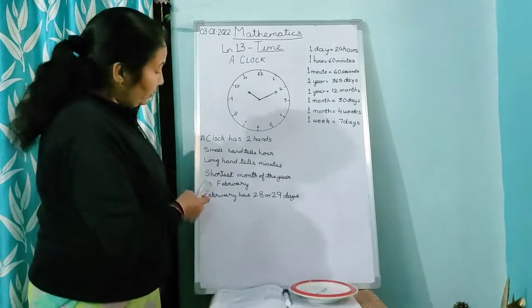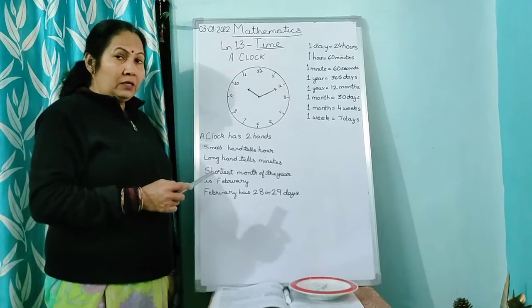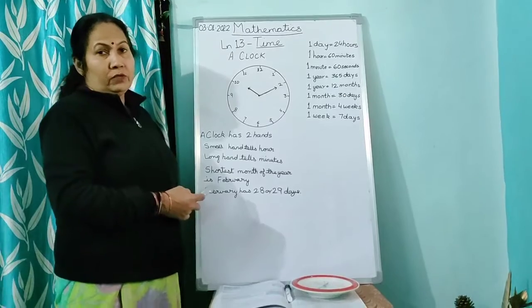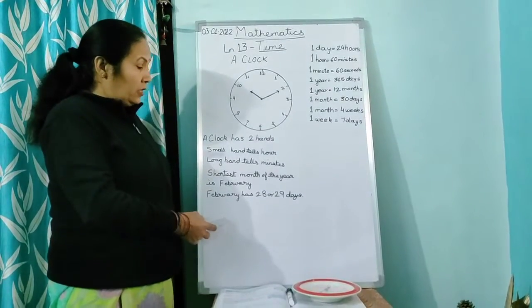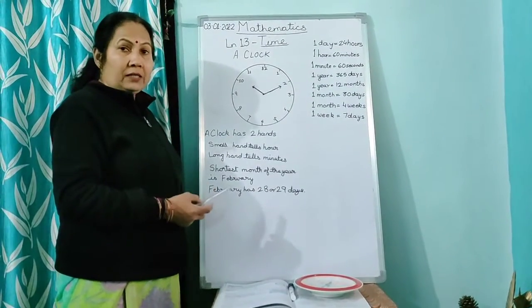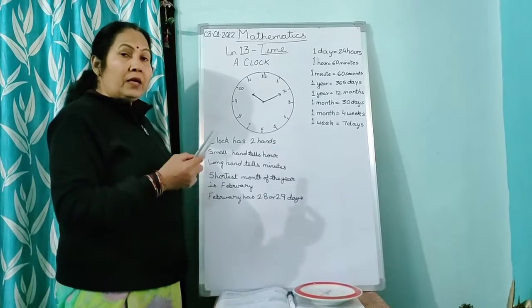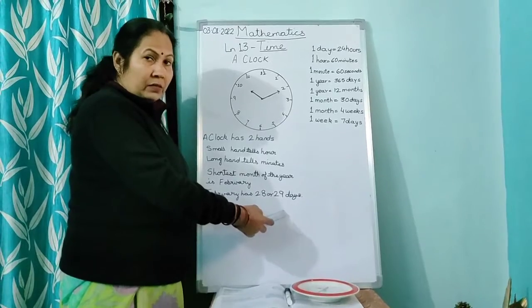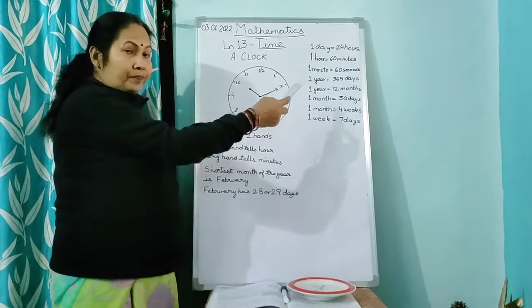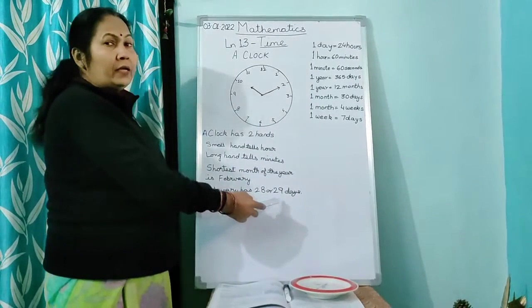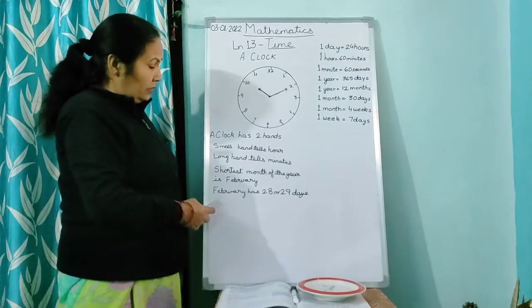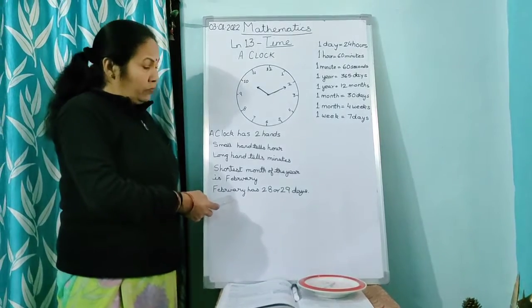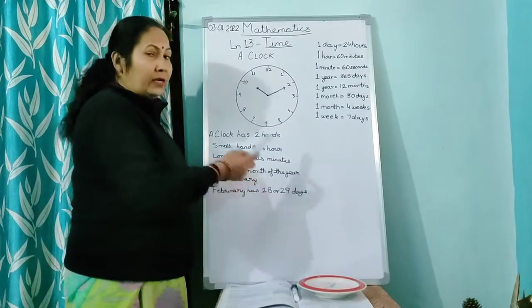Children, you have 12 months in a year. In that, February is the shortest month of the year in which it has 28 days. But after every 4 years, February has 29 days. So as I told you, 1 day is added here. And then that year is called leap year when you have February with 29 days.